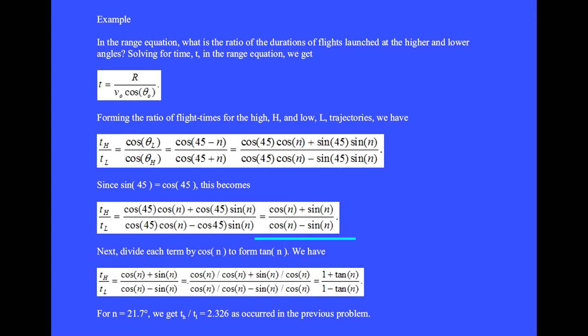We get the result cosine n plus sine n divided by cosine n minus sine n. Next we divide each of these four terms by cosine n to form tan n. We get t_h over t_l equals 1 plus tan n divided by 1 minus tan n. For n equal 21.7 degrees we get 2.326 as occurred in the previous problem.